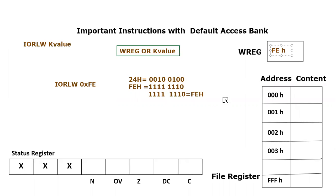We can test it for any other value — we can apply any literal value and it will be OR-ed with the working register. I hope you have understood the concept of this instruction. If you have any confusion or query, you can post in the comment section. Thank you so much for listening.